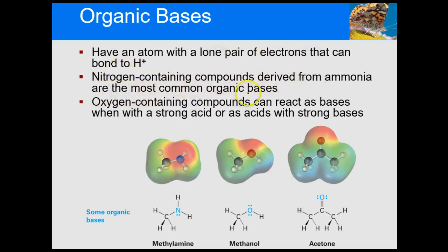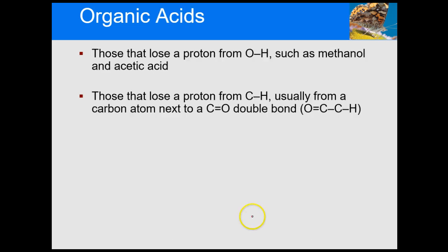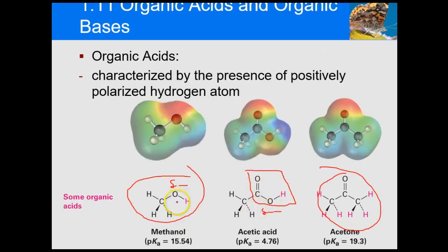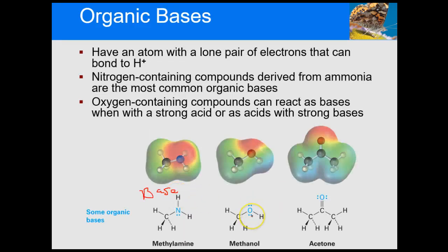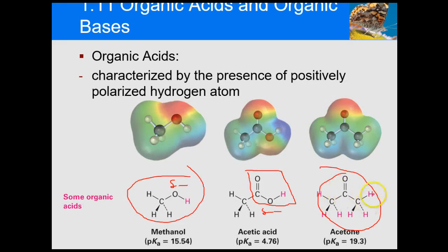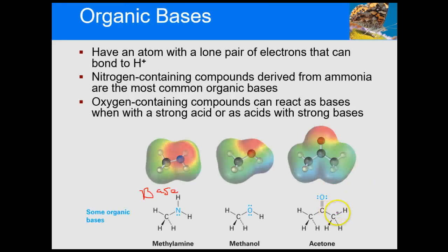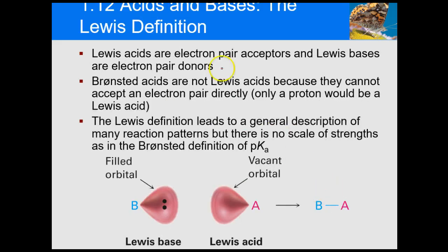Nitrogen-containing compounds derived from ammonia are the most common organic bases. Anything with a nitrogen pretty much acts as a base. Interestingly, methanol and acetone can act both as acids and as bases — amphoteric behavior. We saw acetone acting as an acid in the previous slide, but it also acts as a base. We will talk more about that when we discuss Lewis acids and bases in the next video.